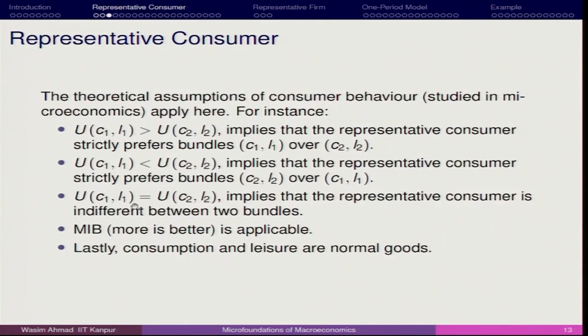What is important is at what level of consumption and leisure a bundle makes the representative consumer indifferent. When U(C1, L1) = U(C2, L2), the consumer is indifferent between the two bundles — both give the same level of utility. Second, 'more is better': the consumer would like more of both goods — more consumption and more leisure — but given the budget constraint, he cannot have both increasing simultaneously.